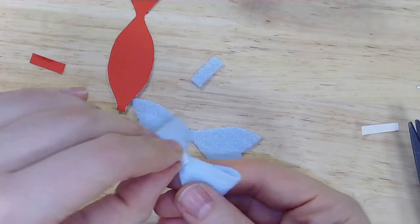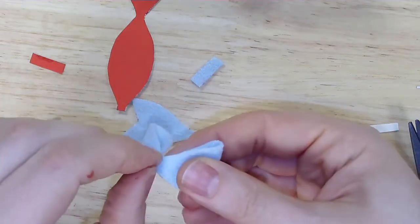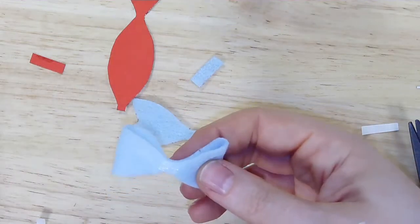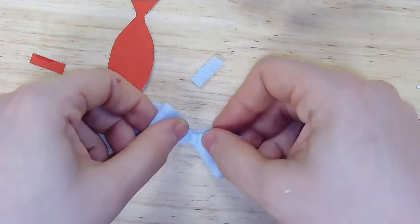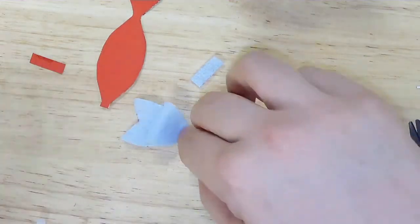Then you want to take that bow shape and stick it to the tail ribbons, which are the pointed ribbons at the base. And as you can see, that makes a nice looking bow shape.